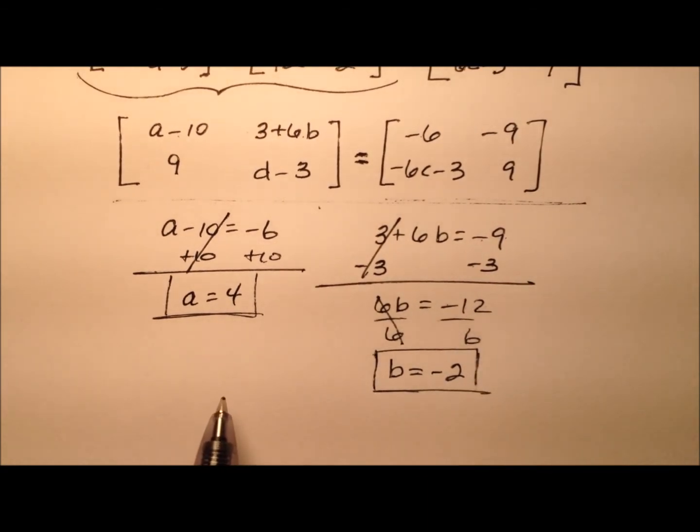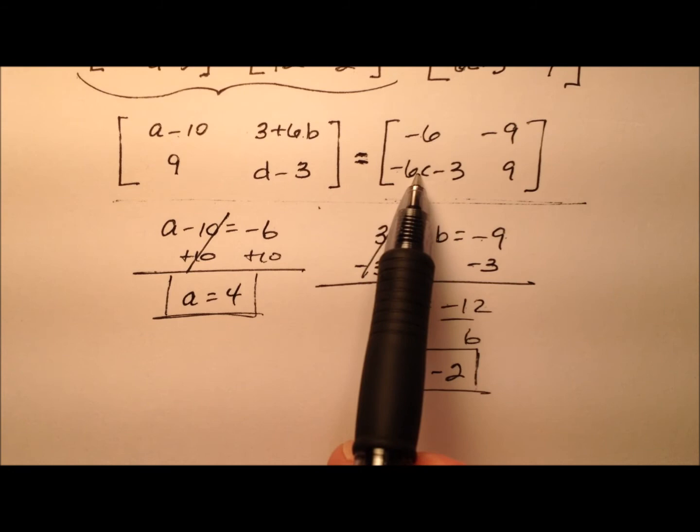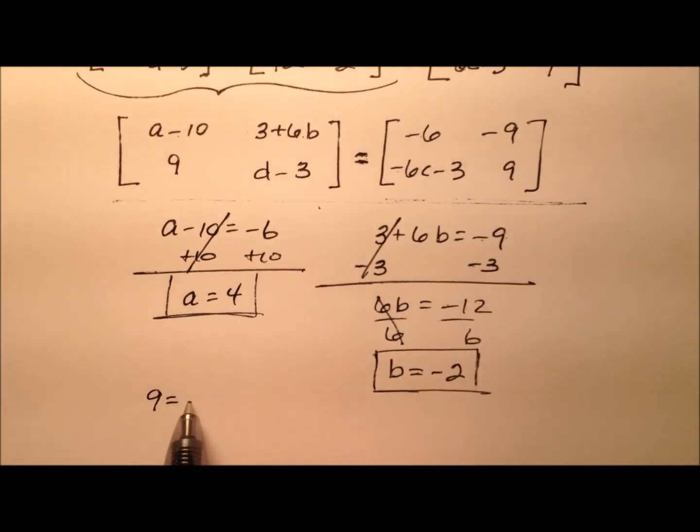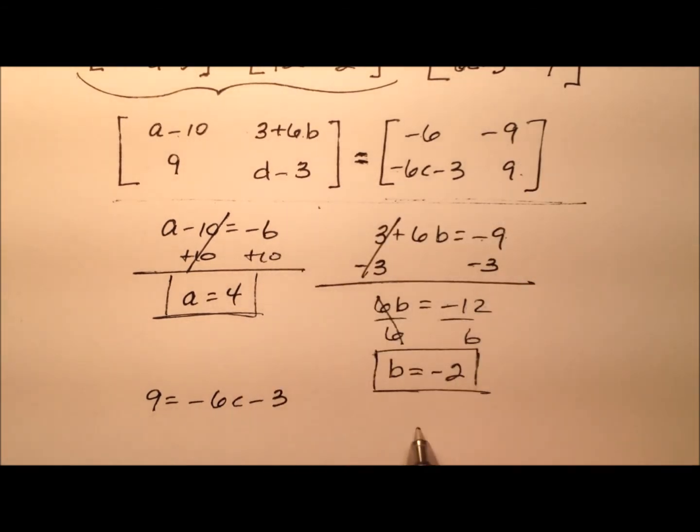So now I just need to finish up by finding the value for C and the value for D. So 9 equals negative 6C minus 3. And finally, D minus 3 equals 9.